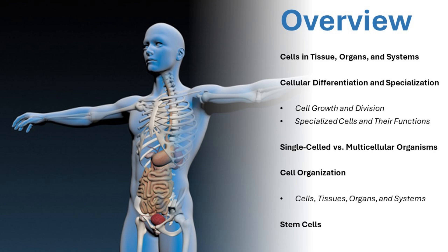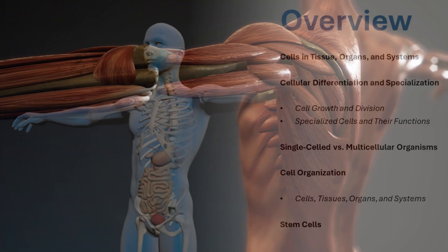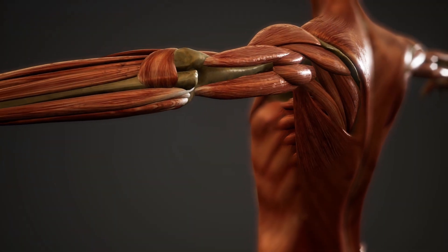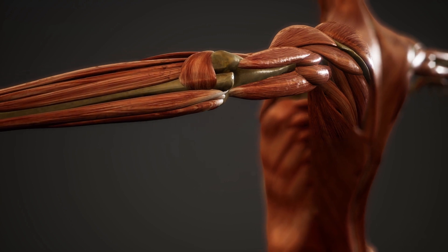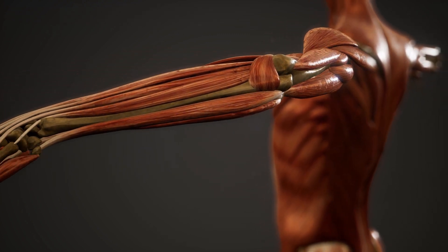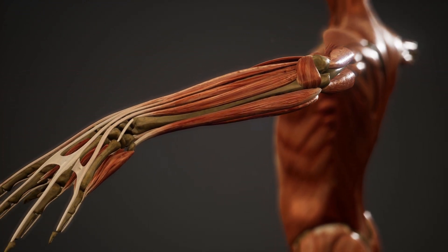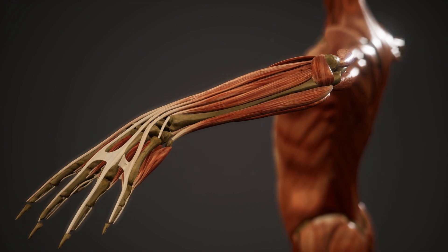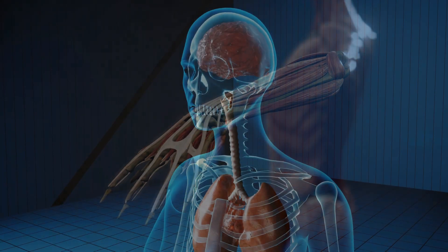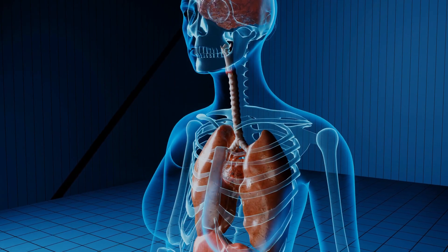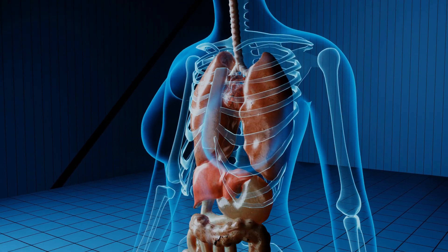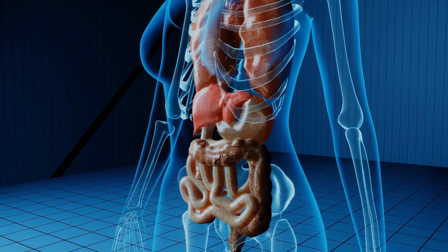Cells are specialized to perform specific functions. For example, muscle cells are designed to contract and enable movement. A group of similar cells working together forms a tissue. Multiple tissues make up an organ, and organs function together in systems that keep the body running.